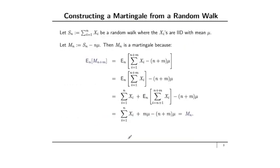Here's our first example of a martingale. We can construct one from a random walk. Let Sn be equal to the sum of Xi's from i equals 1 to n, where the Xi's are iid with mean μ. Then we can set Mn equal to Sn minus n times μ, and in that case Mn is a martingale.